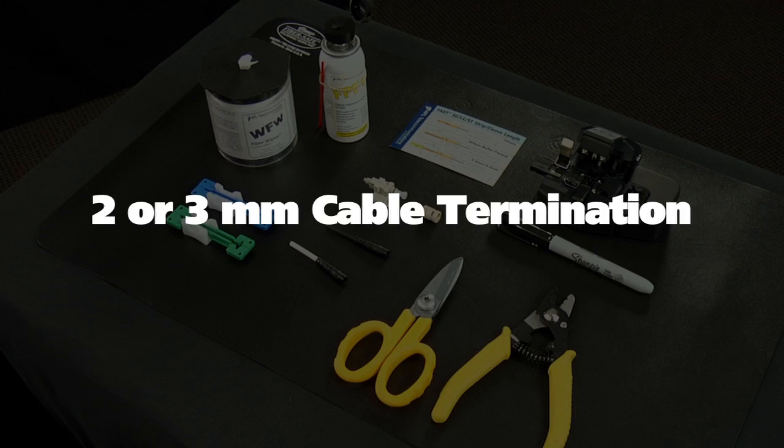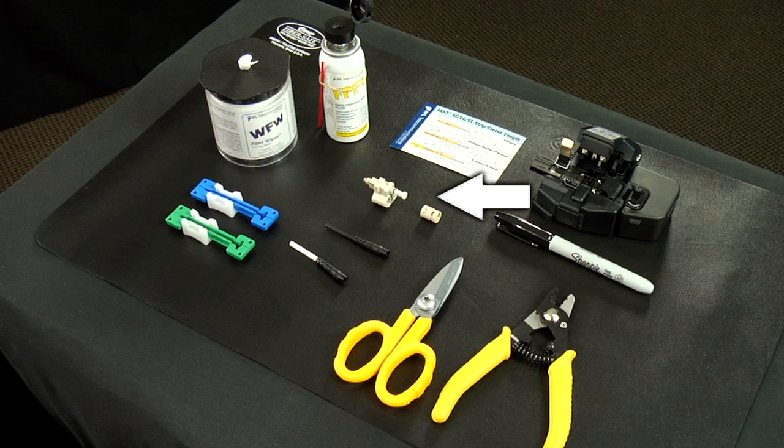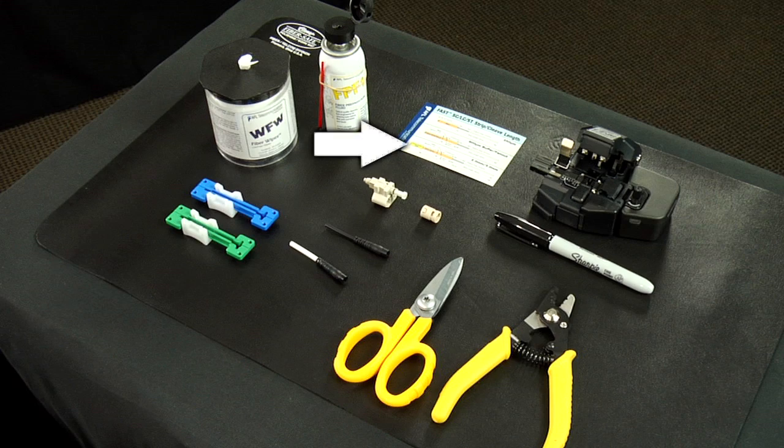Two or three millimeter cable termination. The components and tools required for installation are: fast ST connector assembly, a 2 millimeter boot, a 3 millimeter boot, a 2 millimeter cable clamp, a 3 millimeter cable clamp, Kevlar scissors, a fiber stripper, a marker pen, a CT30A cleaver, fiber prep fluid, lint-free cloth wipes, and a strip template.